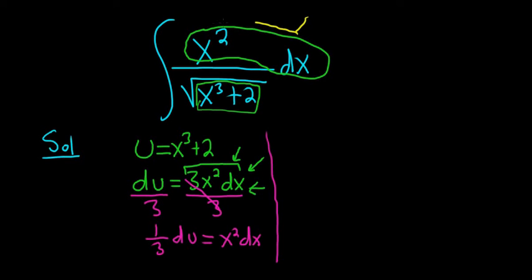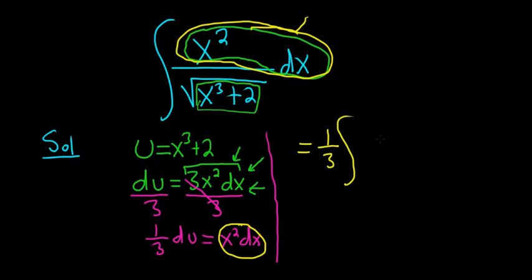This piece here, x²dx, is the same as 1/3 du. So this equals 1/3 times the integral of du over the square root of u.